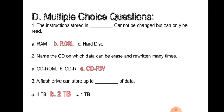First point, the instructions stored in dash cannot be changed but can only be read. The options are RAM, ROM, hard disk. The instructions stored in ROM cannot be changed but can only be read. The answer is ROM.